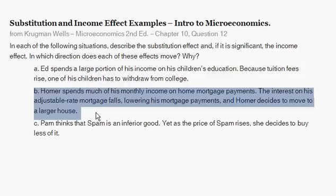Part B: Homer spends much of his monthly income on home mortgage payments. The interest on his adjustable rate mortgage falls, lowering his mortgage payments, and Homer decides to move to a larger house. The substitution effect: with the reduced cost of paying for his house, Homer is said here to be substituting toward a higher quality, larger house. So the substitution effect is having him spend more on housing.